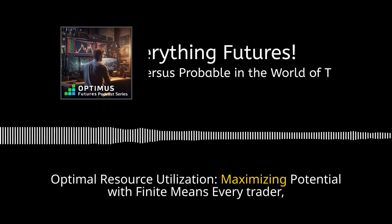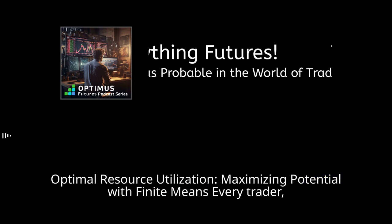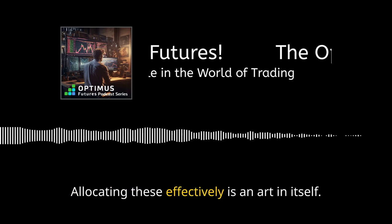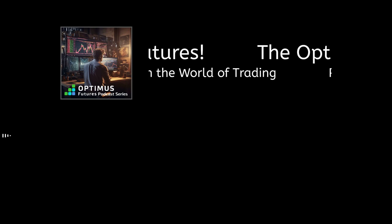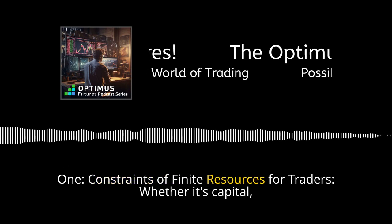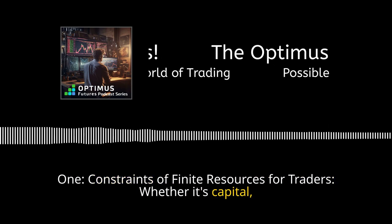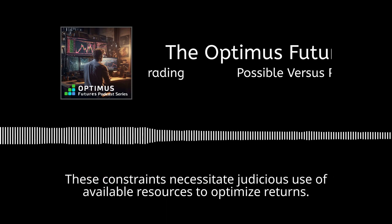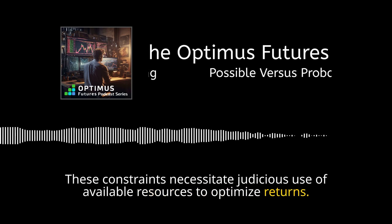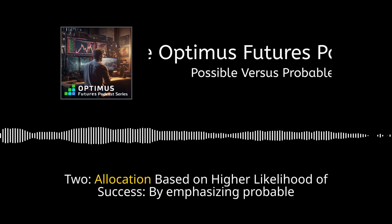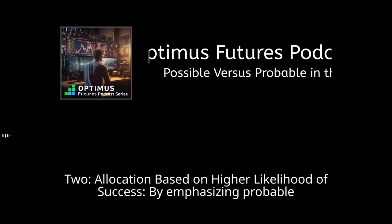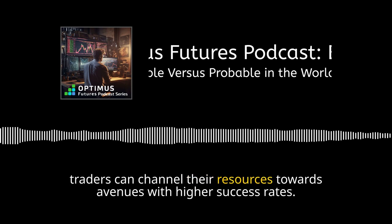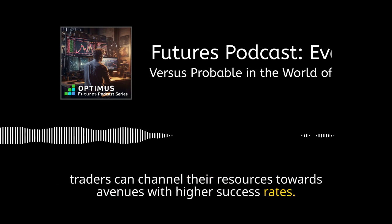This emotional equilibrium prevents rash decisions, allowing for a more measured and consistent trading approach. Every trader, regardless of their scale, operates within resource constraints — whether it's capital, time, or mental bandwidth. By emphasizing probable outcomes in their strategy, traders can channel their resources towards avenues with higher success rates.